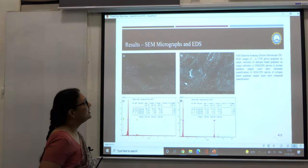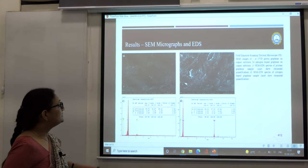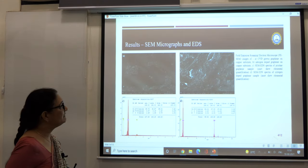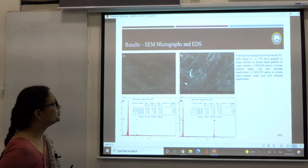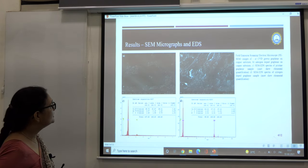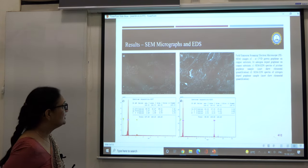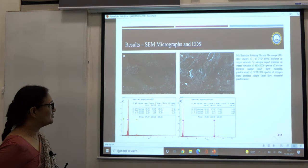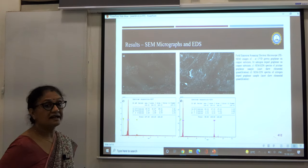This gives you the nitrogen doped graphene on the copper substrate. At the lower side, the EDS spectra of the pristine graphene and the EDS spectra of the nitrogen doped graphene sample are given. We can very clearly see the presence of nitrogen there. The peak here gives you the presence of nitrogen, so the EDS spectra confirms the growth of the desired samples.